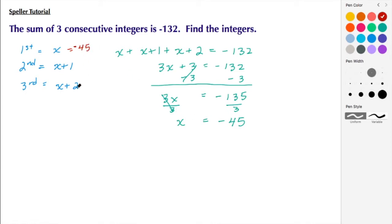My next integer is going to be negative 45 plus one, well that's going to turn out to be negative 44. And then my last integer is going to be negative 45 plus two, and that turns out to be negative 43. So my three integers are going to be negative 45, negative 44, and negative 43. We see that they are consecutive.